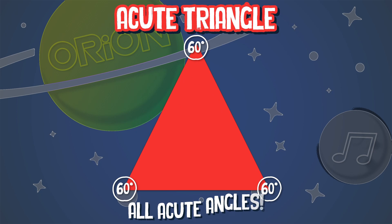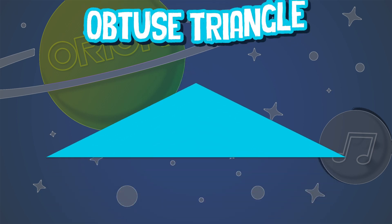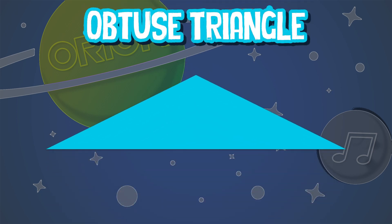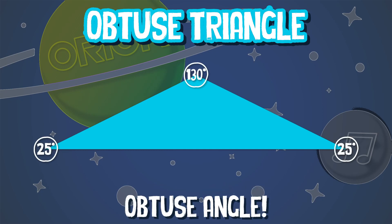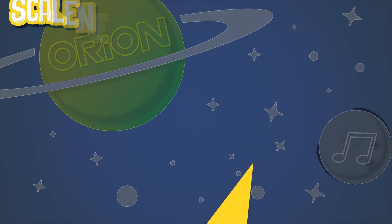The obtuse triangle has one obtuse angle — more than 90 degrees — in its name.